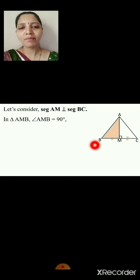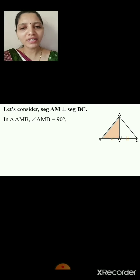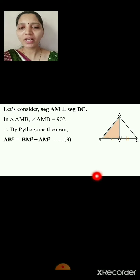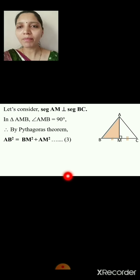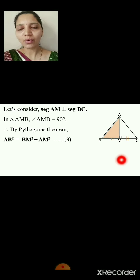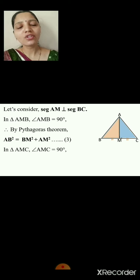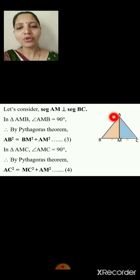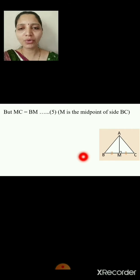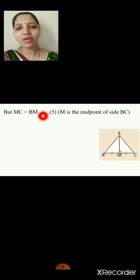In triangle AMB, angle AMB = 90°. By Pythagoras theorem: AB² = BM² + AM² — equation 3. In triangle AMC, angle AMC = 90°. By Pythagoras theorem: AC² = MC² + AM² — equation 4. Since MC = BM (M is the midpoint of side BC) — equation 5 — we get AC² = BM² + AM² — equation 6, taken from equations 4 and 5.